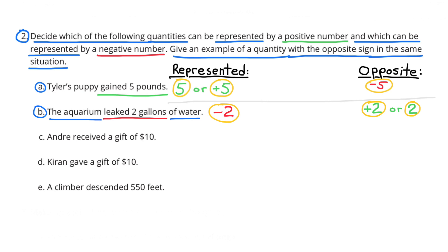B. The aquarium leaked 2 gallons of water. Leaking 2 gallons of water would be negative 2 and the opposite of negative 2 is positive 2.